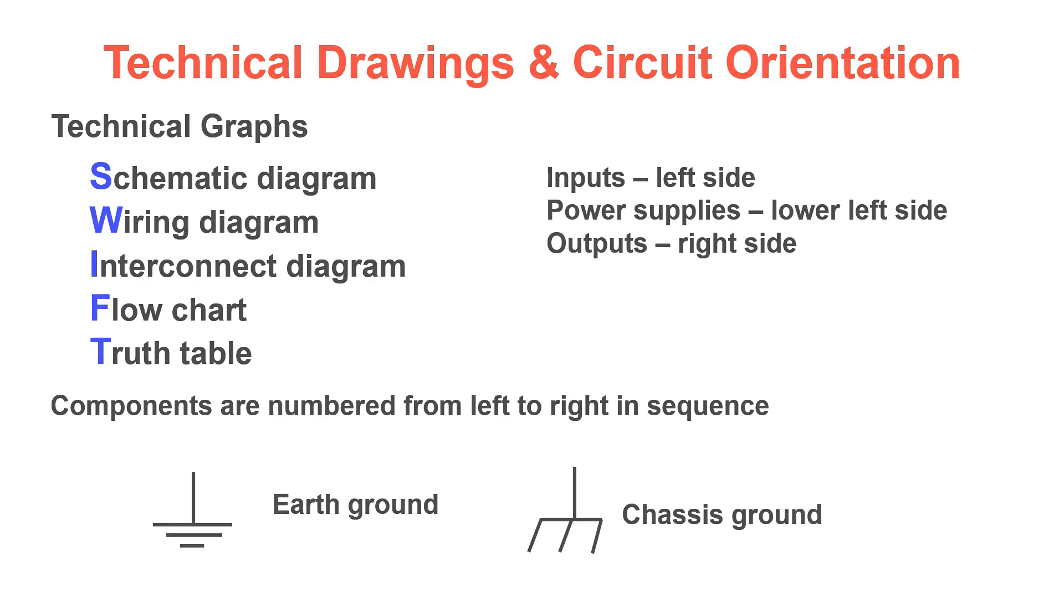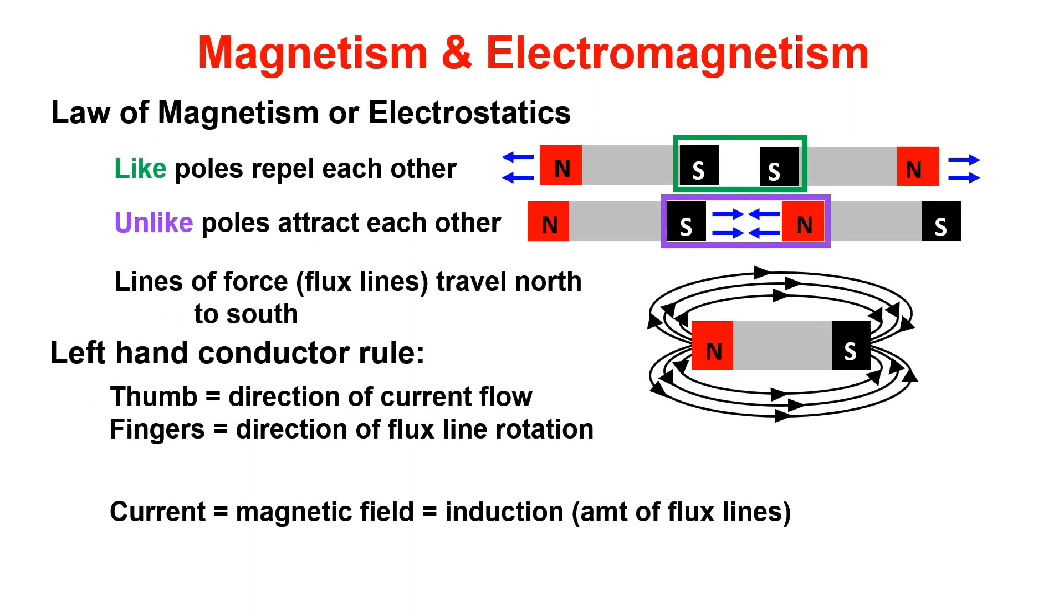This brings us to magnetism. The law of magnetism states that like poles repel each other and that unlike poles attract. In reference to the magnet pictured, lines of force will travel from the north pole of the magnet to the south pole of the magnet. The left-hand conductor rule is used to identify the direction of current and the orientation of flux lines around a wire. With your left thumb pointing in the direction of current flow, the flux lines around the wire will be in the direction of your fingers.